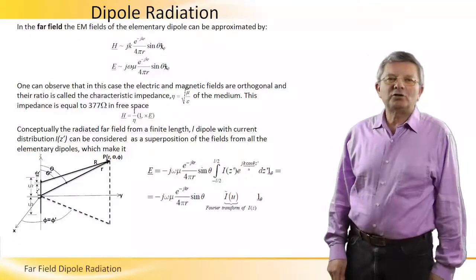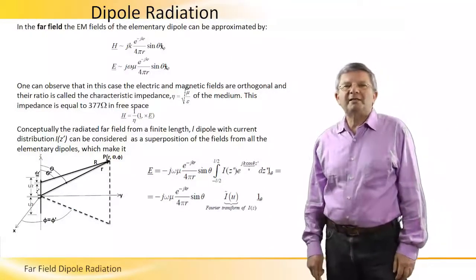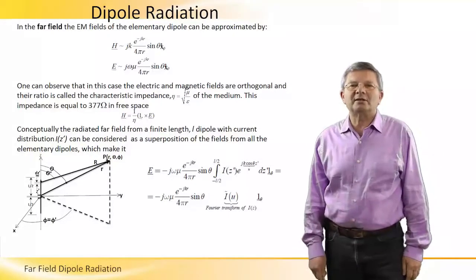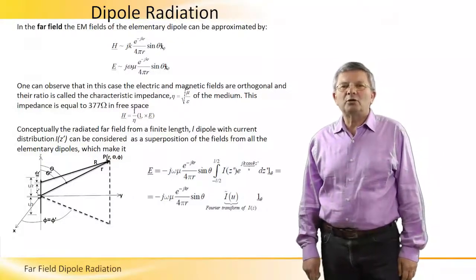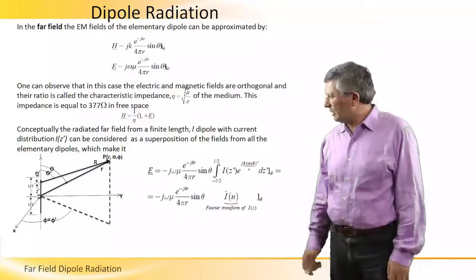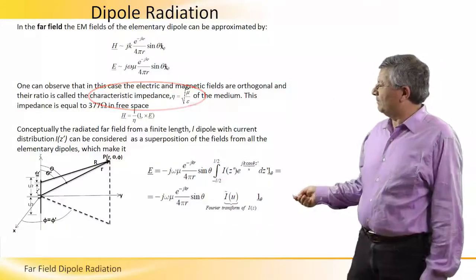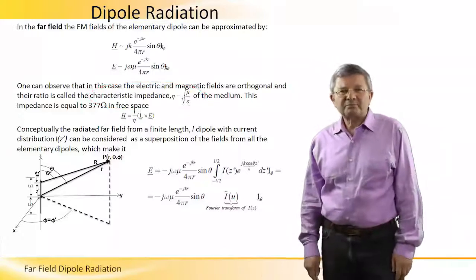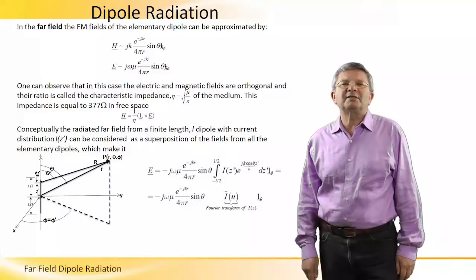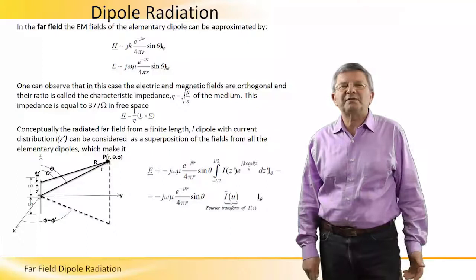The ratio between E and H is also called the characteristic impedance, denoted by eta equal to the square root of mu over epsilon of the medium. This impedance is equal to 377 ohms in free space.